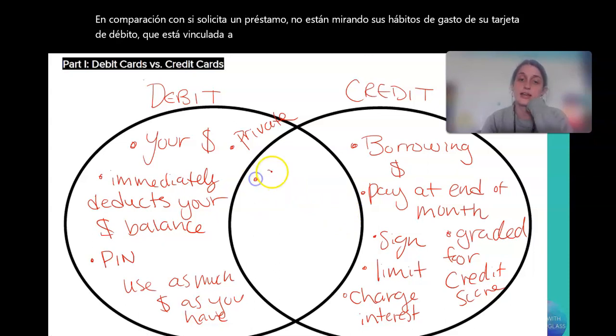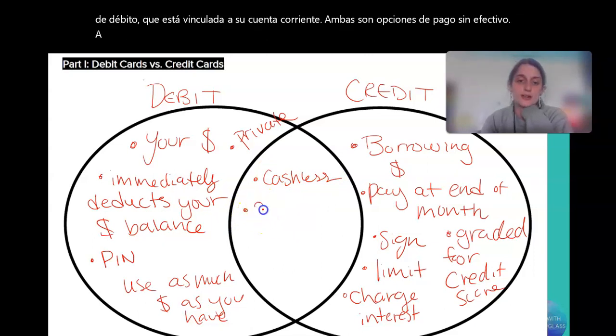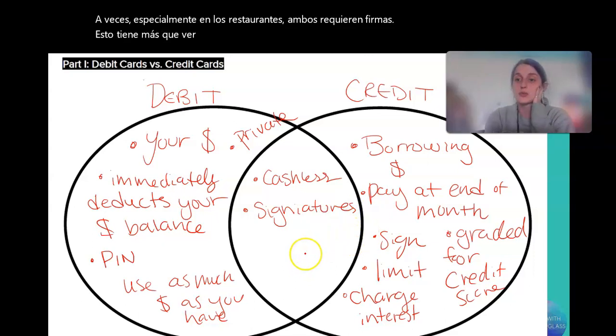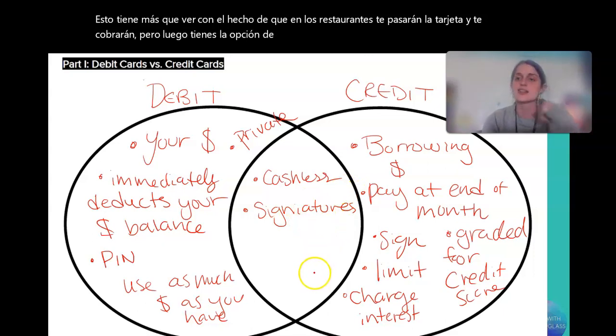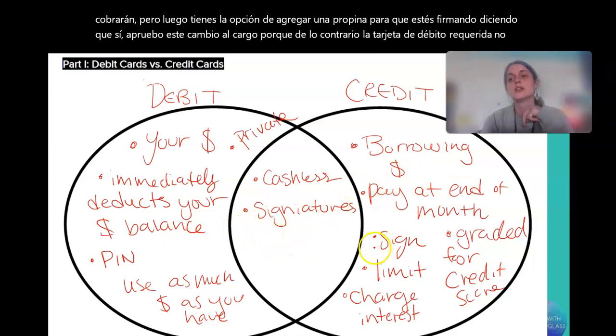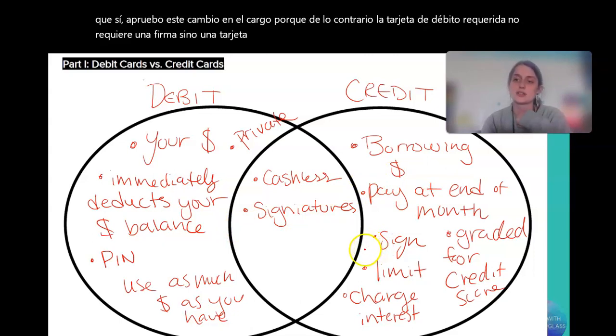So, both of them are cashless payment options. Sometimes, like especially at restaurants, both require signatures. This has more to do with the fact that at restaurants, they will swipe your card and charge you, but then you have the option to add a tip. So, you're signing saying, yes, I approve this change to the charge because otherwise a debit card does not require a signature.